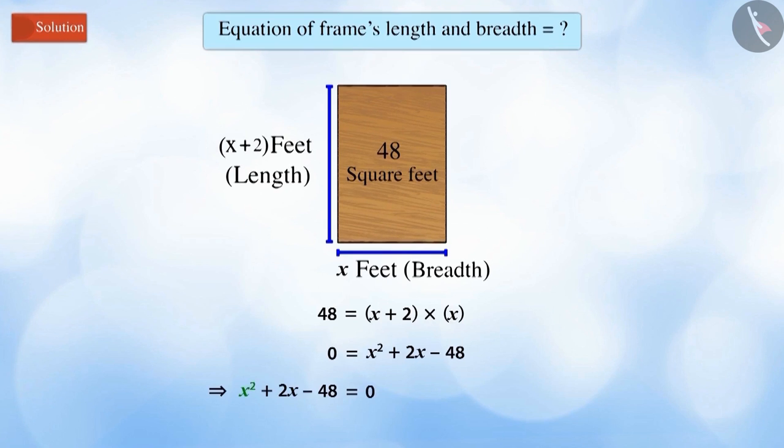on solving, we get x² + 2x - 48 = 0. Using this equation, Rita can find the length and breadth of the frame. Let's look at one more example.